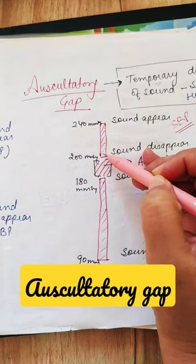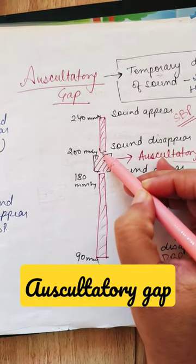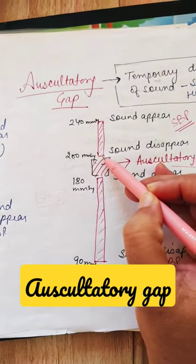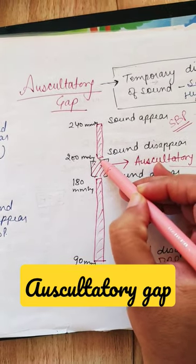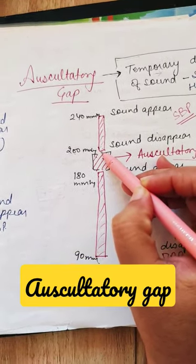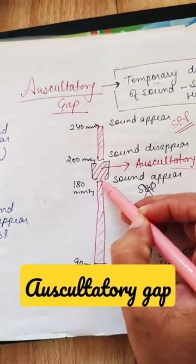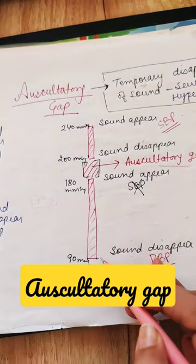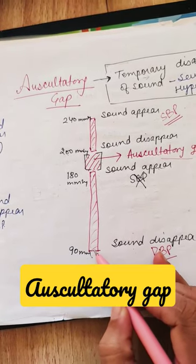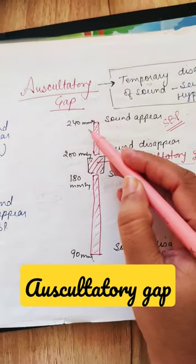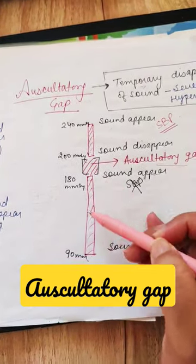At 200 mmHg the sound disappears, so you might feel that 200 is the diastolic value — but this is wrong. After some gap, the sound reappears, and then the sound disappears again at around 90 mmHg. So 90 is the true diastolic value and 240 is the true systolic.